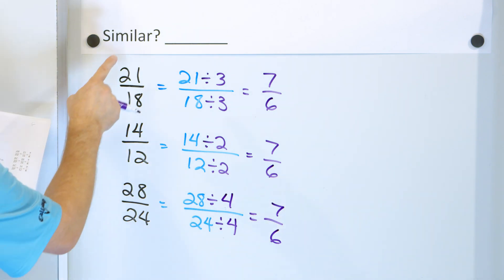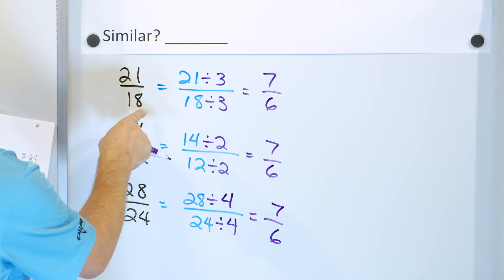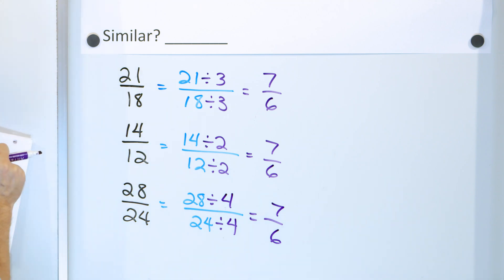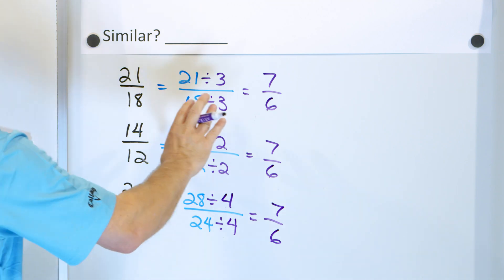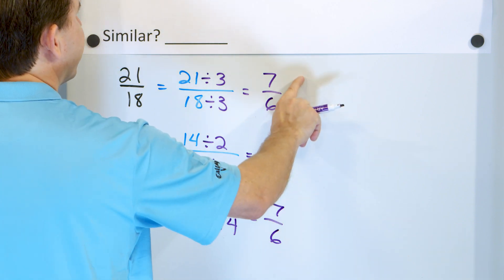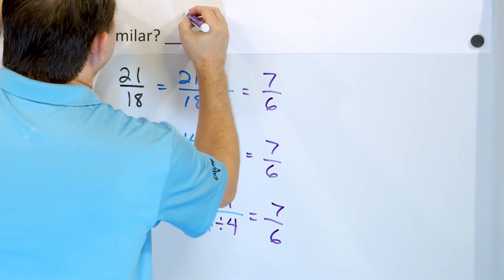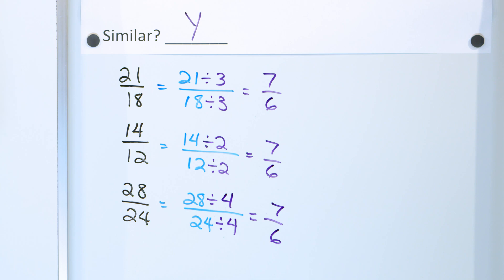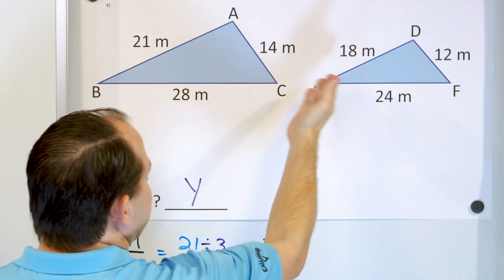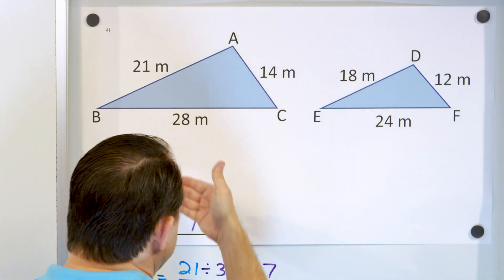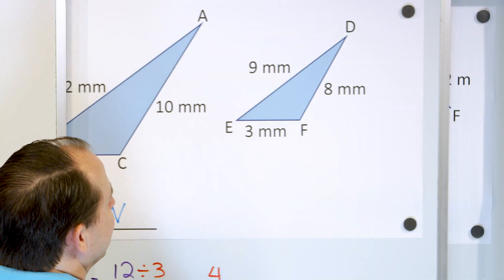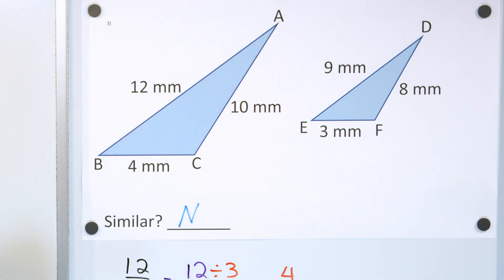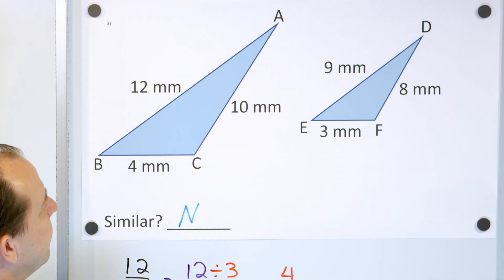We get 7/6, 7/6, and 7/6 — all three ratios are equal. So yes, these two triangles are similar. This one looked similar visually, and in fact it is. The previous problem also kind of looked similar visually, but it just wasn't when we did the math.